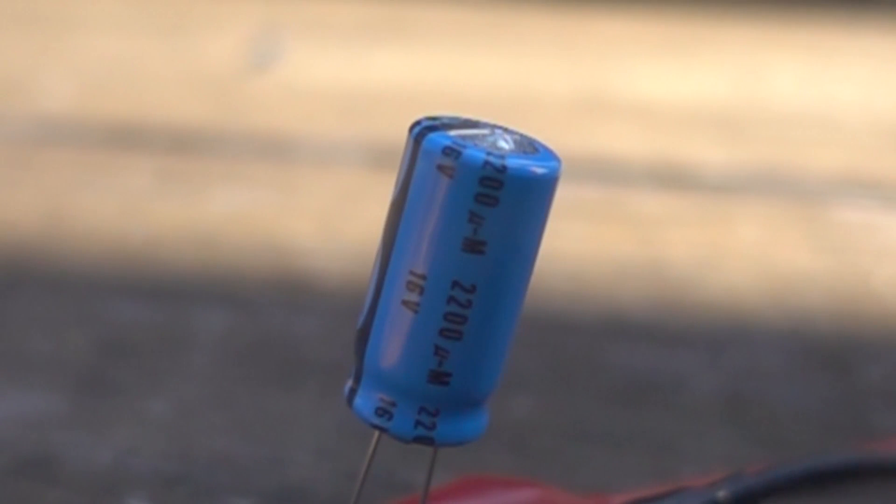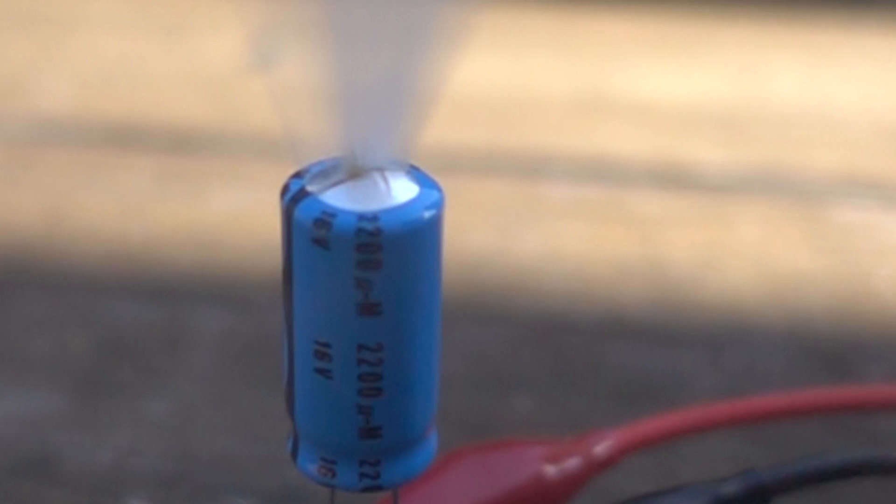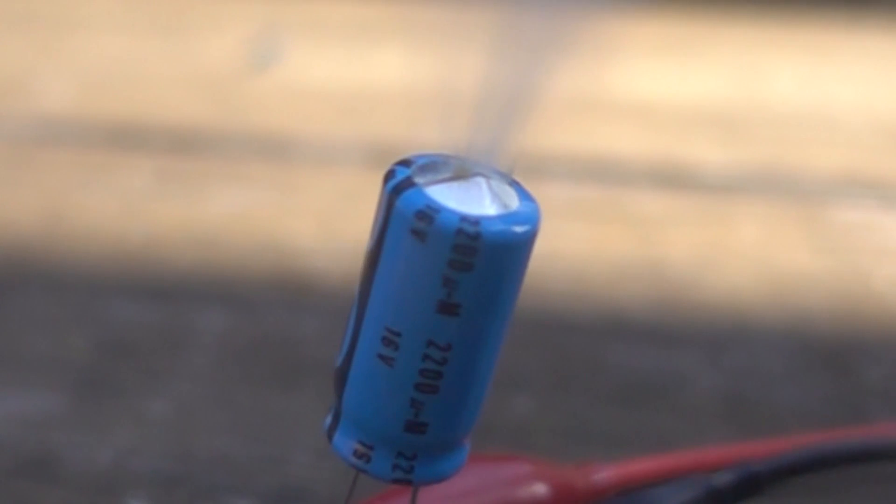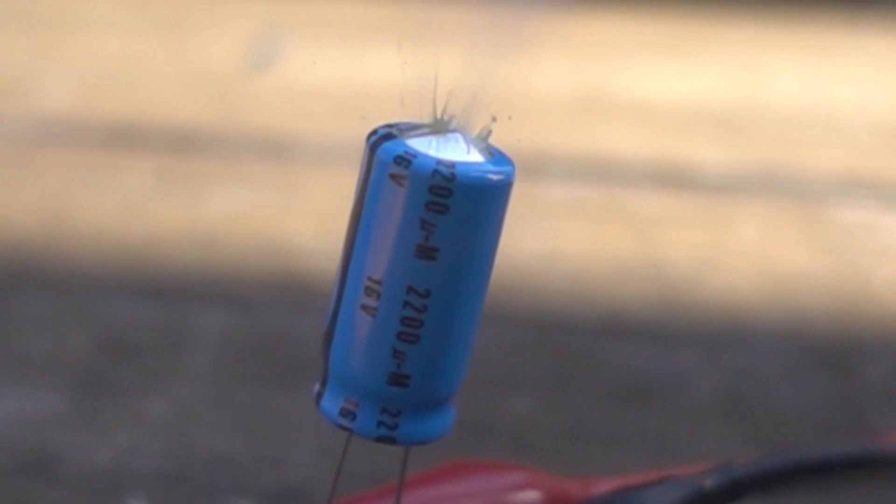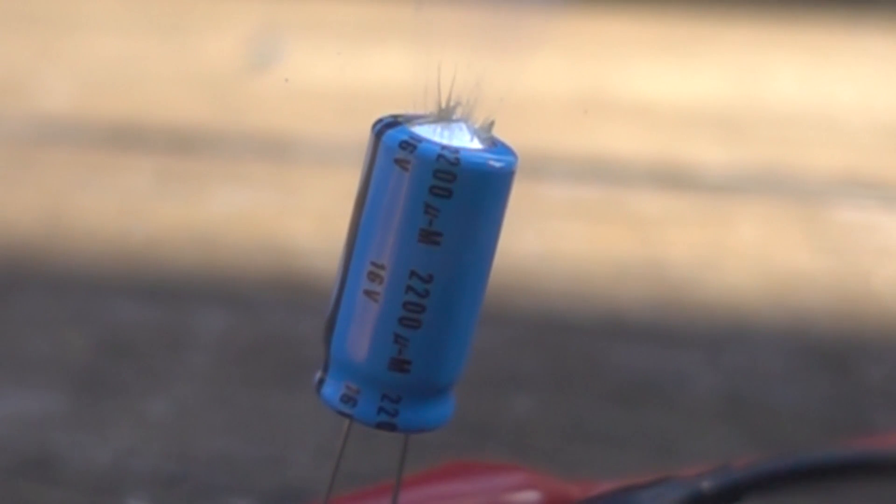So the safety vents on these caps really do do their job. I mean, look at this. Bam! There it is. I mean, massive amount of energy being released there. All the electrolyte inside is being converted to steam. Pressure builds up and bam! But the capacitor didn't explode. I couldn't get a single one to do it, actually.